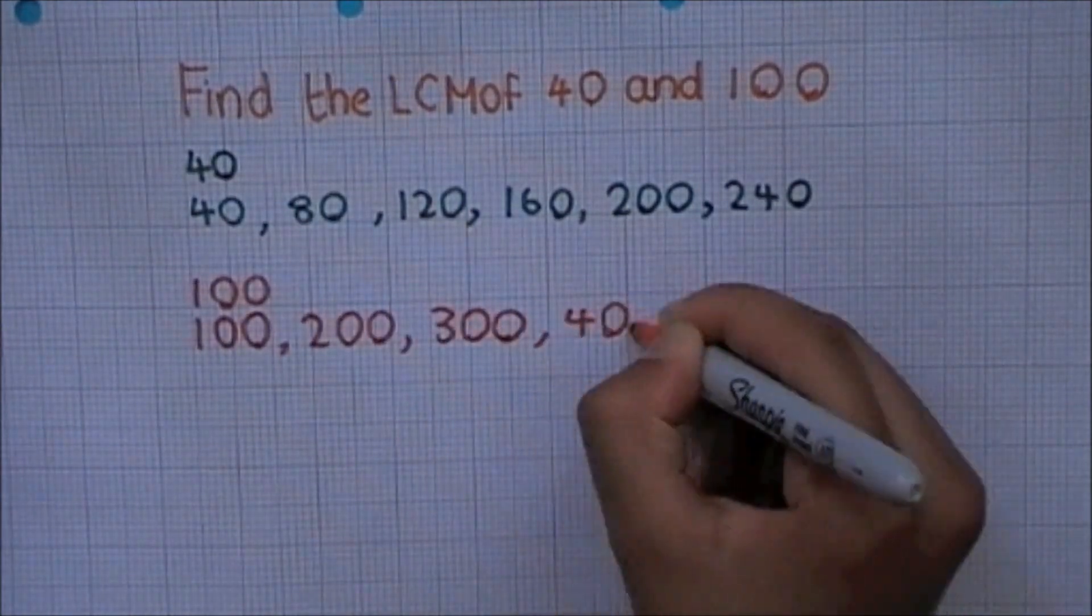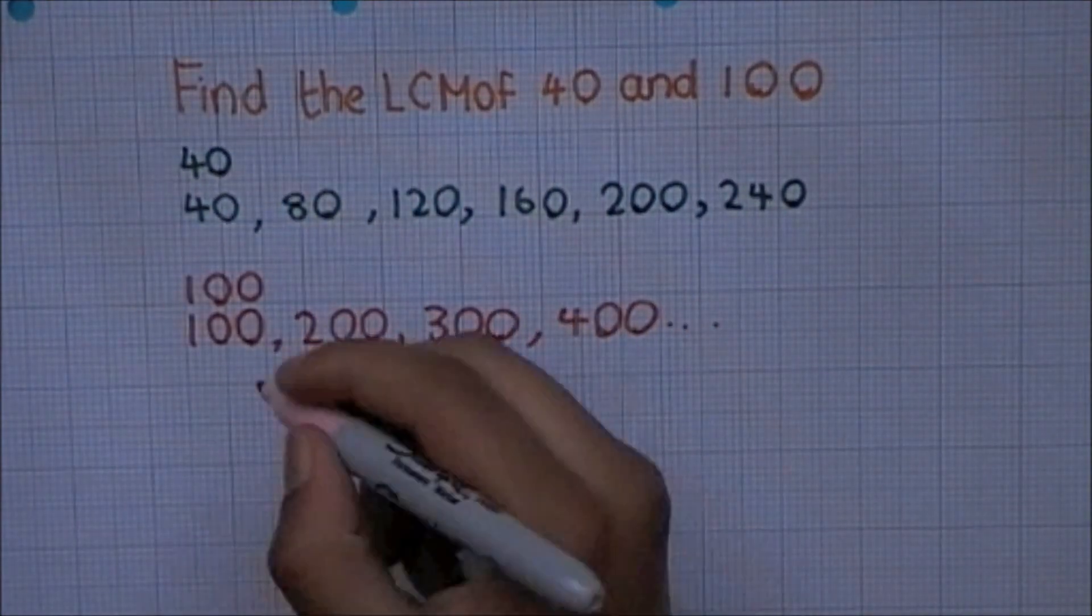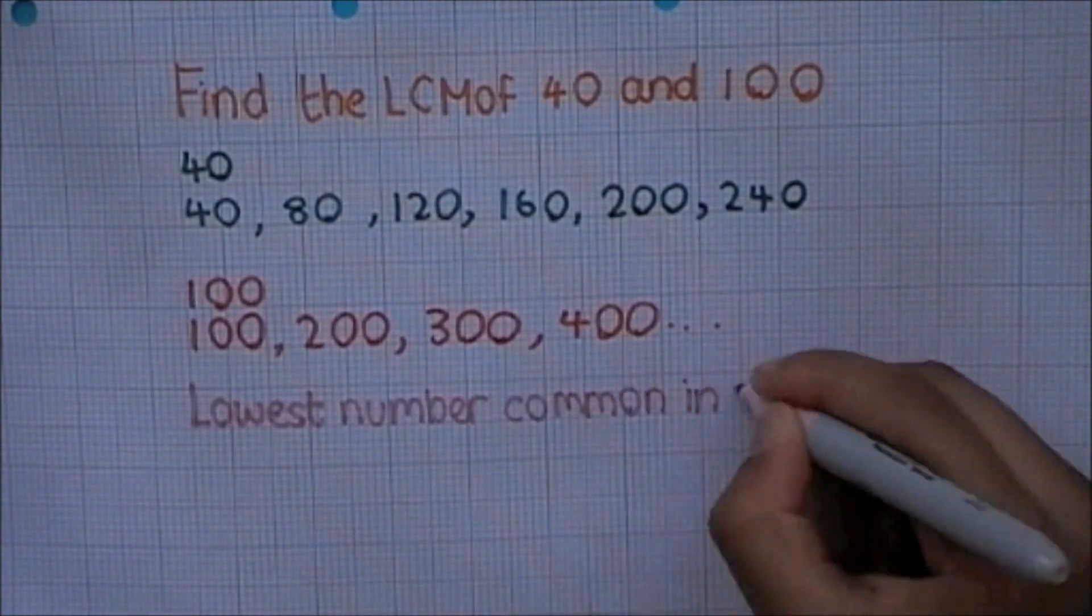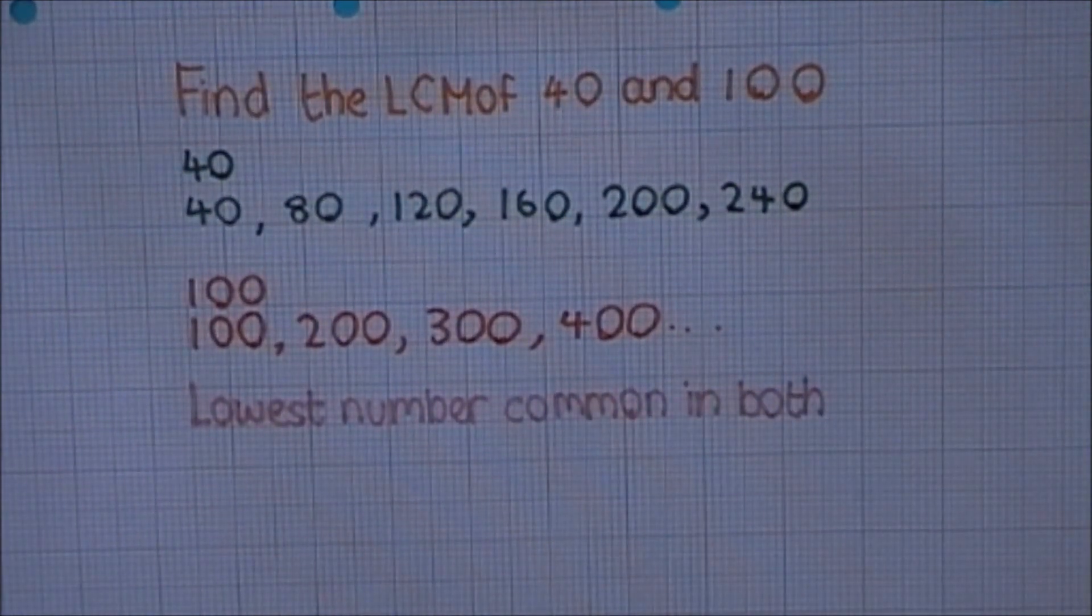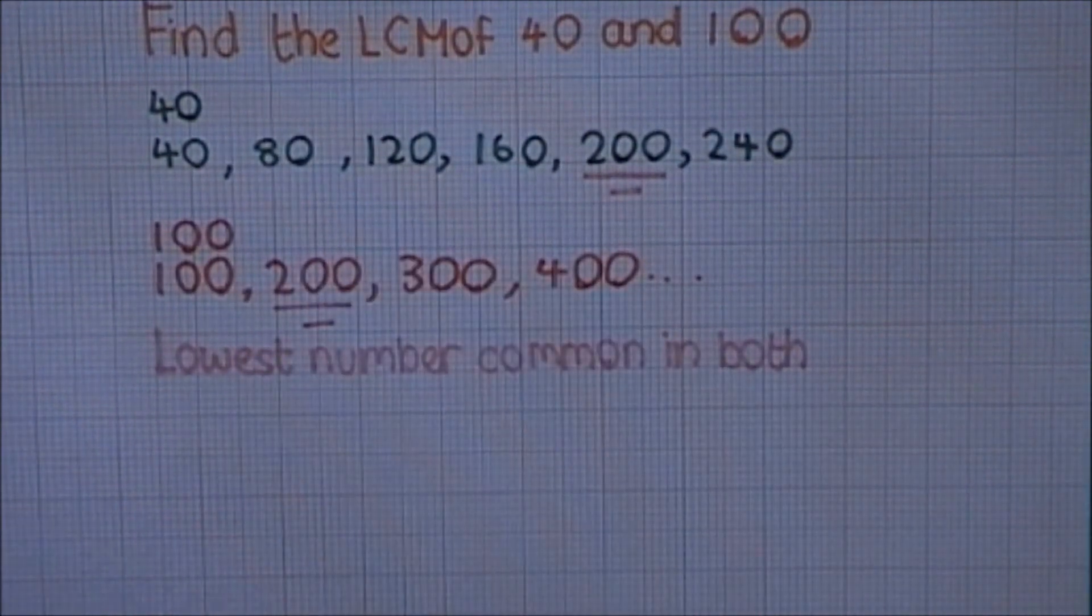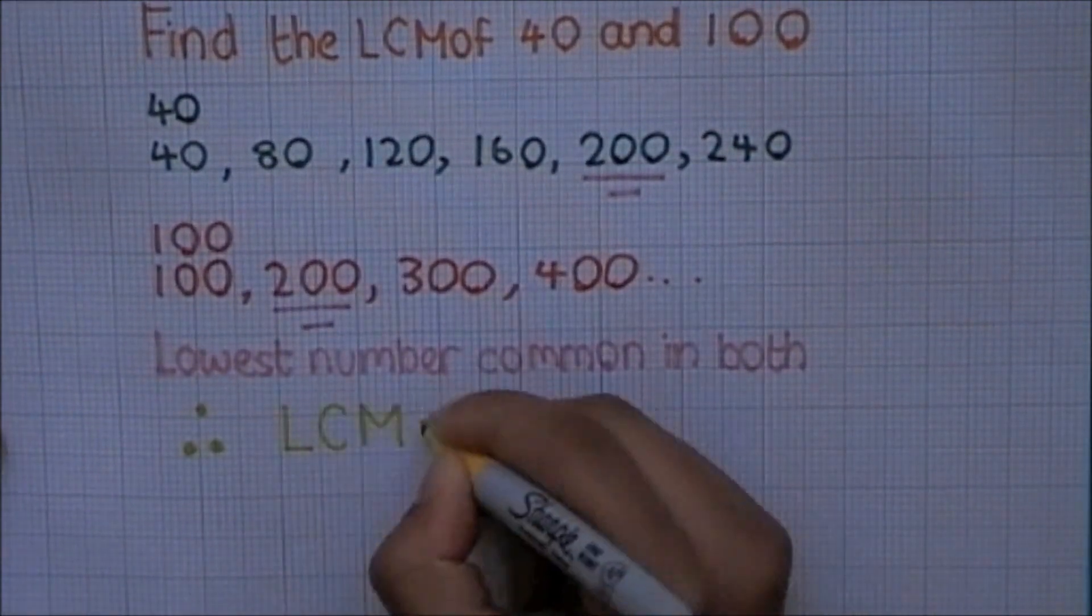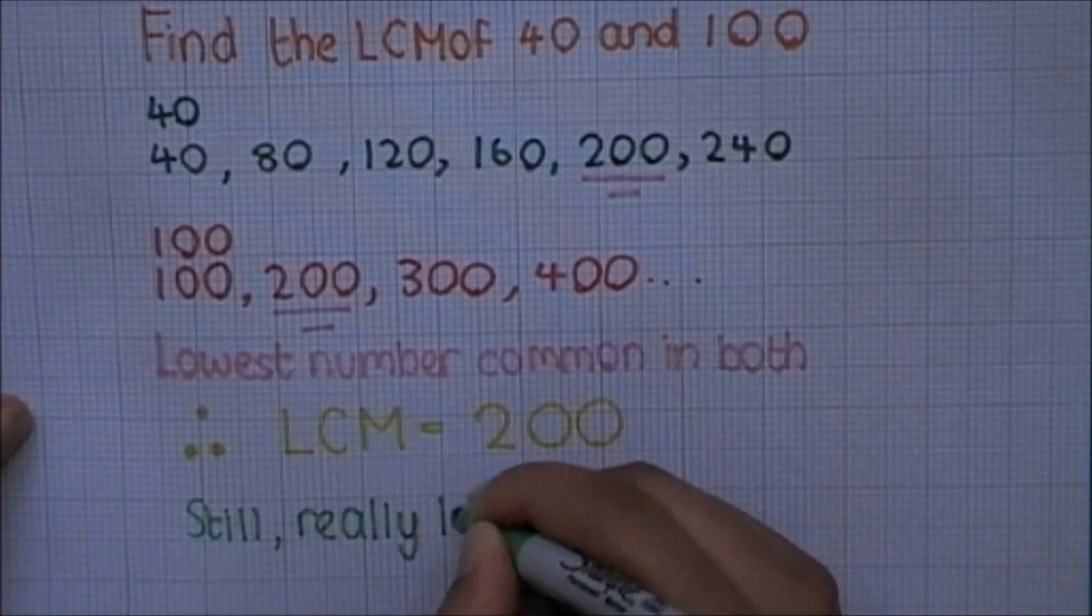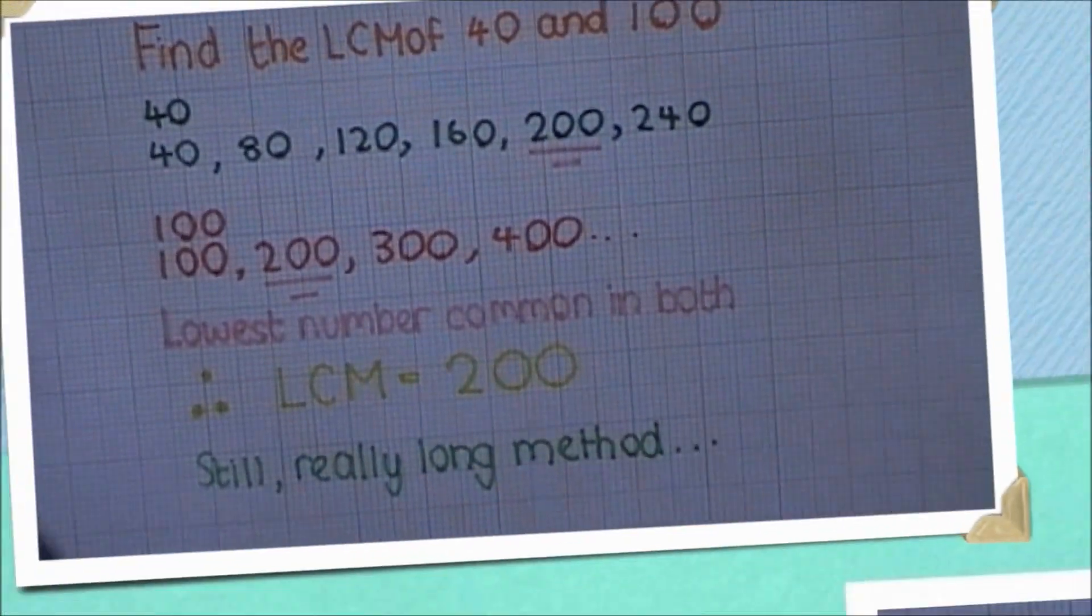And then the same for 100. 100, 200, 300, 400. The lowest number that is common in both cases is 200. Therefore, the LCM is 200. But that was still a really long method.